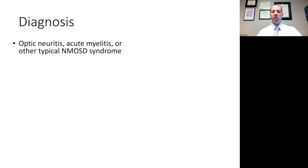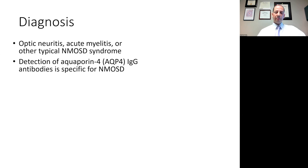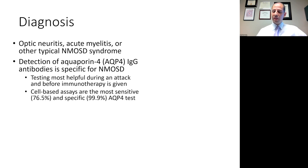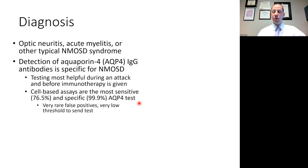So how do we diagnose this condition? Patients need to have a typical clinical feature of NMO spectrum disorder, which would include optic neuritis, acute myelitis, or another syndrome typical of NMOSD. The detection of these antibodies is specific for the condition. Testing is most helpful when done during an attack and before immunotherapy is given, as immunotherapy may decrease the sensitivity of the test. Cell-based assays are the most sensitive and specific aquaporin-4 antibody tests. The sensitivity is about 76%, but the specificity is almost 100% — 99.9% — resulting in very rare false positives. You can have a very low threshold to send this test; if you wanted to send it in every case of optic neuritis, that would probably be okay.